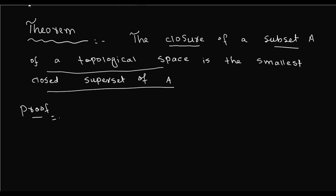Since the intersection of any number of sets is always a subset of each of those sets, the closure of A, being the intersection of its closed supersets, is the smallest closed superset of A. This completes the proof. I hope you have understood this theorem. Thank you very much.